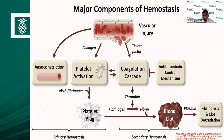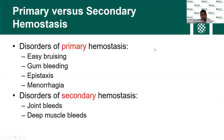Secondary hemostasis involves coagulation factor deficiencies like hemophilia A (factor VIII deficiency), hemophilia B (factor IX deficiency), fibrinogen deficiency — all these come under secondary hemostasis. So how do you recognize this in practice? How do you know if this is a primary hemostasis problem — a platelet disorder, von Willebrand factor problem, or collagen problem — versus a coagulation factor problem? If you have easy bruising, gum bleeding, epistaxis, menorrhagia — mucocutaneous bleeding — think about primary hemostasis. If you have joint bleeds or deep muscle bleeds, intramuscular hematomas, think about coagulation factor defects.